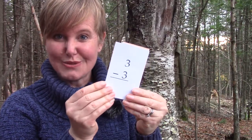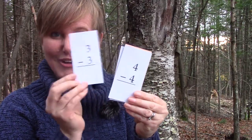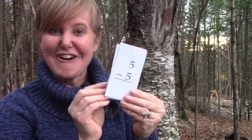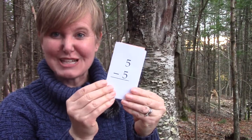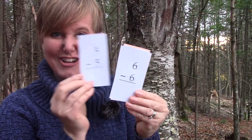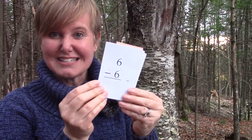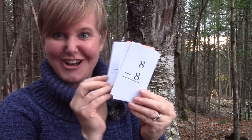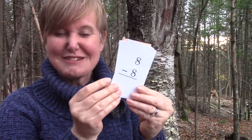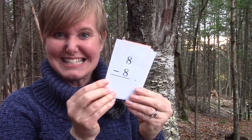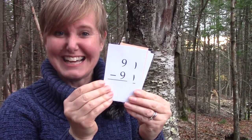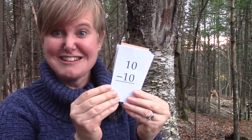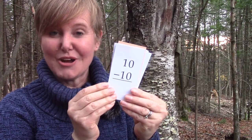Three minus three is zero. Four minus four is zero. Five minus five is zero. Six minus six is zero. Seven minus seven is zero. Eight minus eight is zero. Nine minus nine is zero. And ten minus ten is zero.